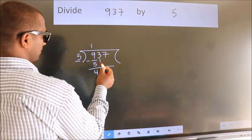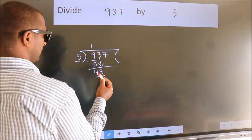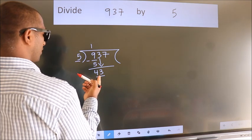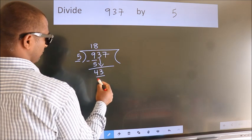After this, bring down the beside number, so 3 down, so 43. A number close to 43 in the 5 table is 5 times 8 is 40.